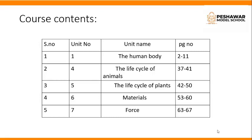In this term, we will study five chapters. Number 1: the human body. Number 2: the life cycle of animals. Number 3: the life cycle of plants. Number 4: materials. And number 5 is the fourth chapter.